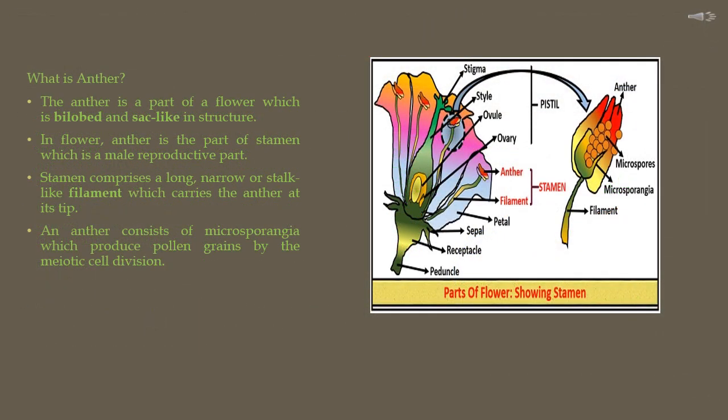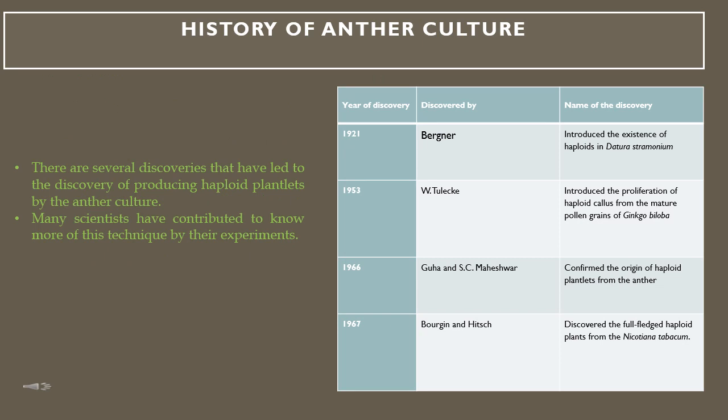Before starting the technique, let us understand what an anther is. The anther is a part of the flower which is bilobed and sack-like in structure. It is a part of the stamen, which is the male reproductive part. The stamen is composed of a long narrow stalk-like filament which carries the anther at the tip. At the tip, the anther consists of microsporangia which produce pollen grains by meiotic cell division.